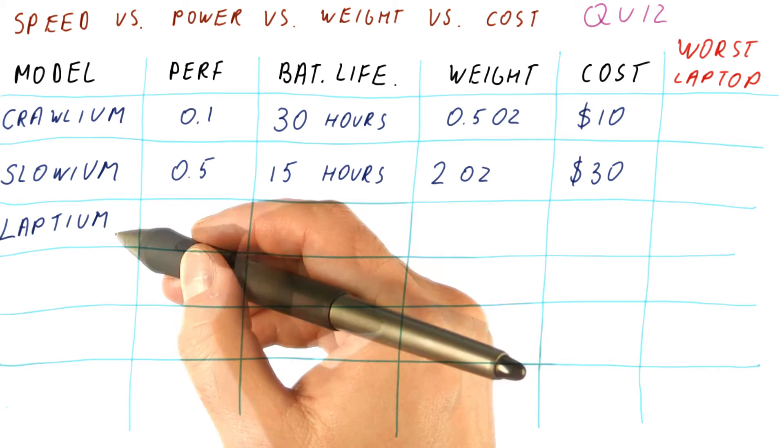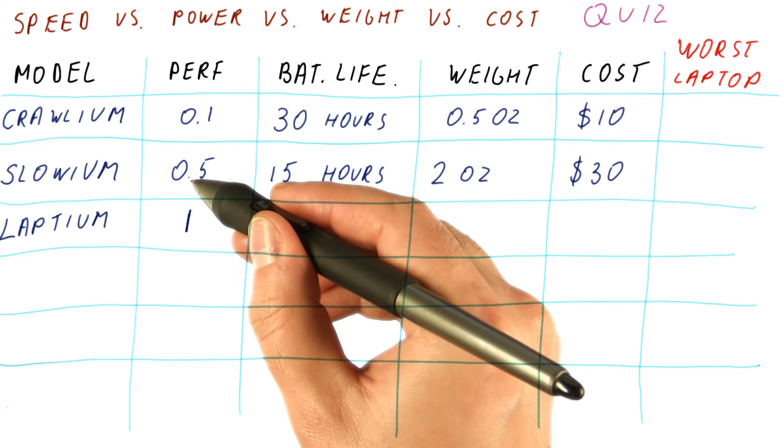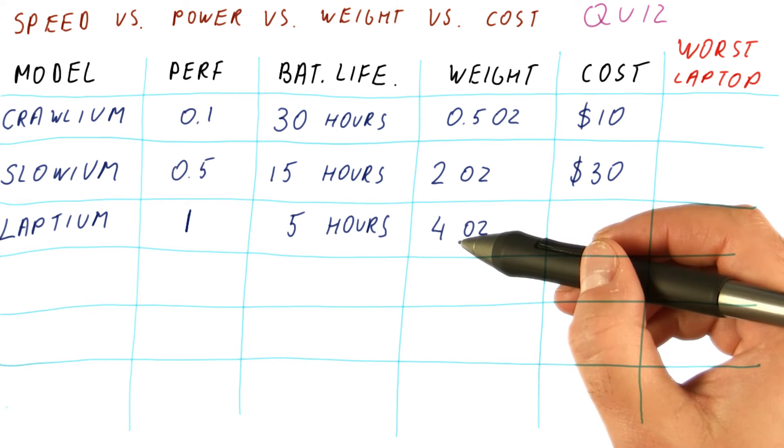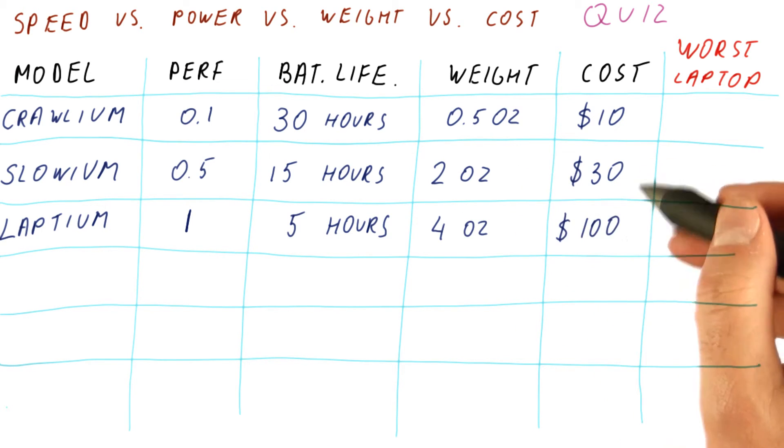Then we have our Laptium processor. It has twice the performance of the Slovium, five hours of battery life. It's twice as heavy as the Slovium, costs about $100.